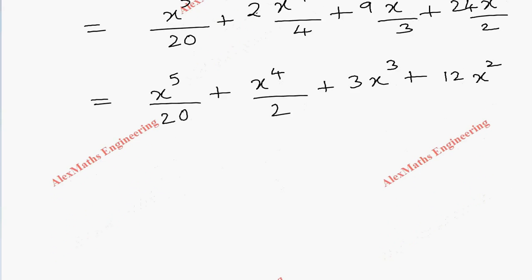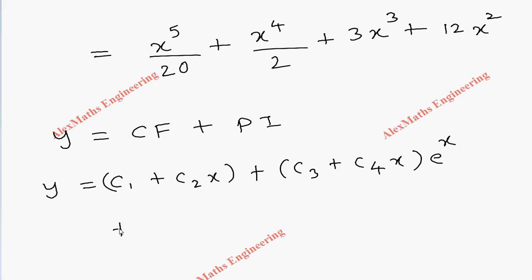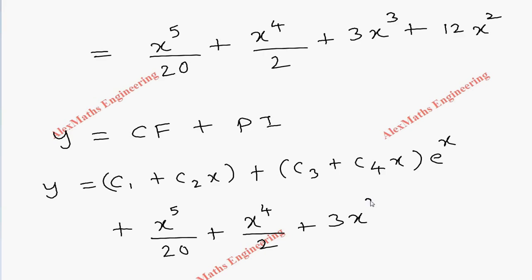For the complete solution, we write y = CF + PI. So the final answer is: y = c₁ + c₂x + (c₃ + c₄x)eˣ + x⁵/20 + x⁴/2 + 3x³ + 12x².